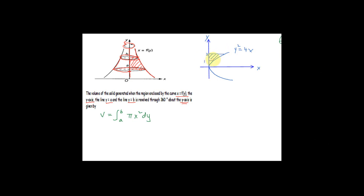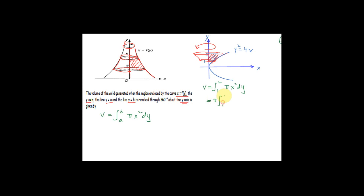Let's do this example: find the volume generated by the region bounded by the curve y² = 4x, y = 1, y = 2, and the y-axis, revolved 360 degrees about the y-axis. You will get a solid. The formula gives: volume = ∫ from 1 to 2 of π x² dy. From y² = 4x, we get x = y²/4, so x² = y⁴/16. Therefore: volume = π ∫ from 1 to 2 of y⁴/16 dy.